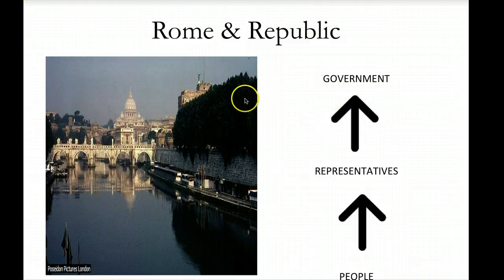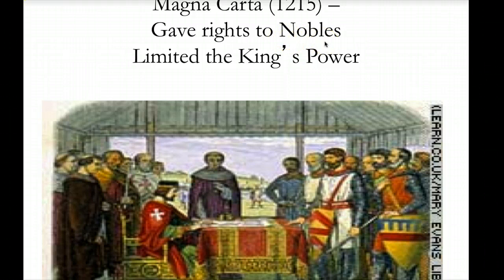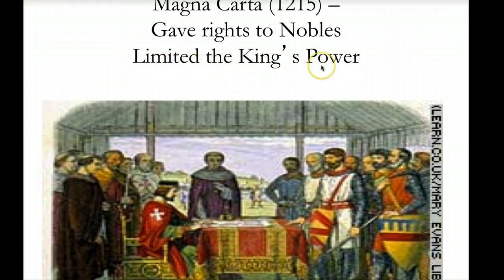These ideas came from ancient Athens and ancient Rome, which is located in Italy. We also took ideas from the history of Great Britain. The main idea to limit the power of the government came from limiting the king's power. In 1215, a group of nobles — basically the elite and wealthy in England — used their forces to persuade the king of England to sign a document called the Magna Carta, which put restrictions on what the king could do and what he could sign into law.